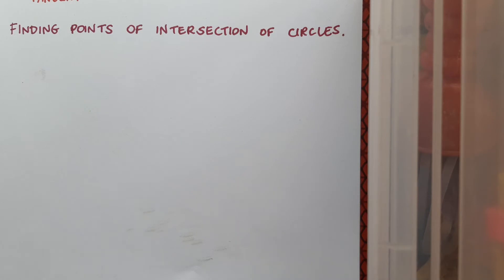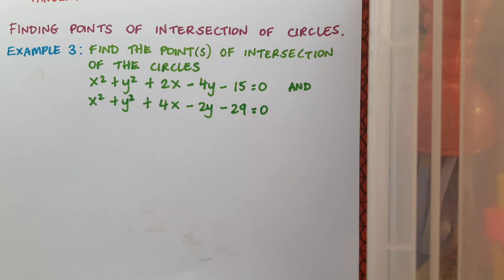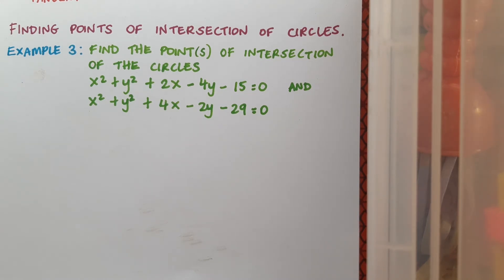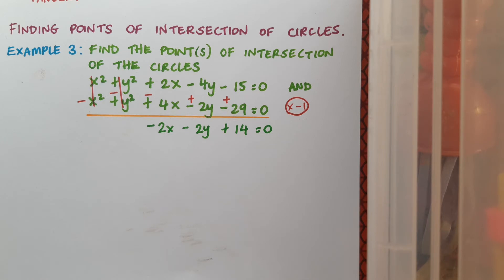Now that we've established how to find common chords and common tangents, we're going to find the points of intersection of circles, using the knowledge we've just gained. Here's our example: find the point or points of intersection of the circles x² + y² + 2x - 4y - 15 = 0 and x² + y² + 4x - 2y - 29 = 0. The first thing to do is figure out the common chord or common tangent of these two circles. Pause the video and try it yourself, then double check before going on. This works out as -2x - 2y + 14 = 0, which is either the common chord or common tangent.